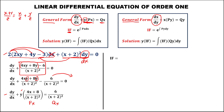To solve for the integrating factor, we compute e to the power of the integral of P(x) dx, where P(x) is (4x plus 8) over (x plus 2)². To simplify, since 4 and 8 are both divisible by 4, we factor out 4: this gives 4 times (x plus 2) over (x plus 2)². Since 4 is a constant, we put it outside the integral.